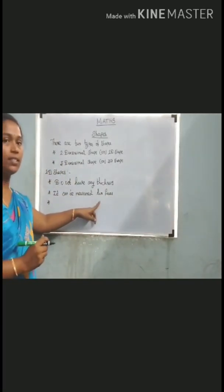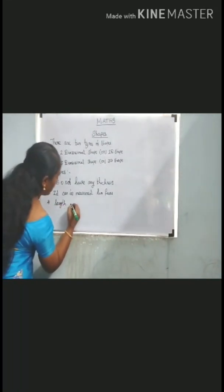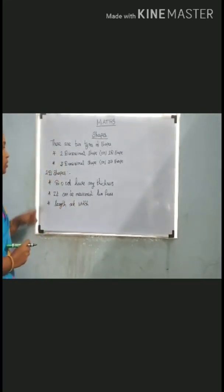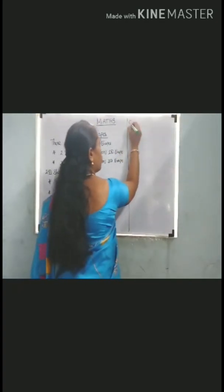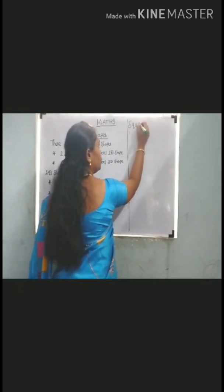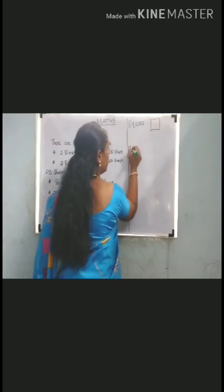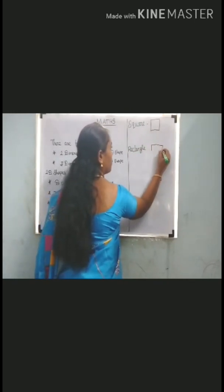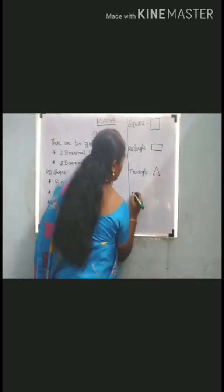What are the two faces? Length and width. What are the 2D shapes? 2D shapes are: square, rectangle, triangle, and circle.